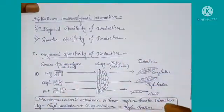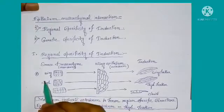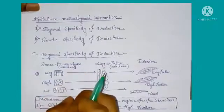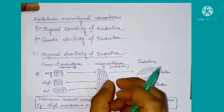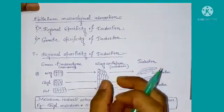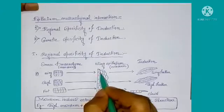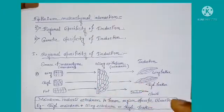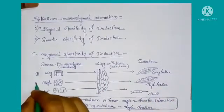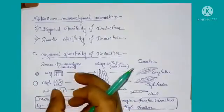Now I discuss about the experiment which is performed in the chick. In the first case of the experiment, mesenchymal cells are collected from the wing of the chick and the epithelium or ectoderm is also collected from the wing region of the chick. Then the mesenchymal cells are placed beneath the epithelium cells, and after some time we see that wing feather is developed.